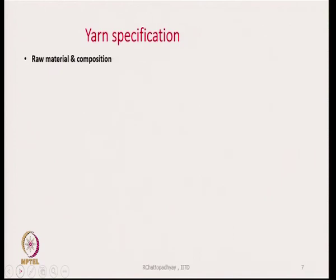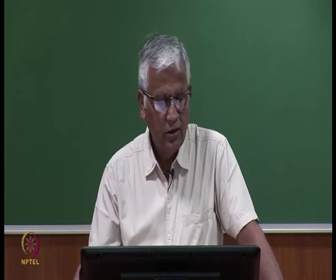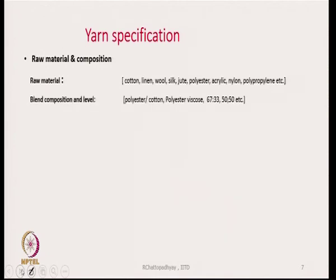The other thing a designer should know is the specification of the yarn. As a designer who wants to buy yarns from manufacturers or vendors, you must be aware of the specifications. First is raw material and composition — raw material could be cotton, linen, wool, silk, or a blend composition such as polyester-cotton or polyester-viscose. You have to specify the blend components and the blend ratios.